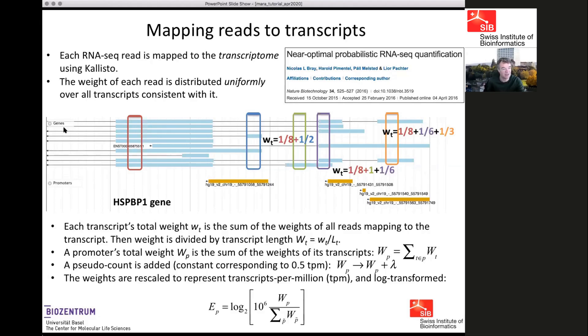Here I've shown five different RNA-seq reads, with the transcriptome annotation in light blue showing various isoforms. The red read maps to eight different transcripts, so we assign a weight of 1/8 to each. The blue read overlaps two transcripts, so each gets weight 1/2. The green read hits just one transcript, so it gets weight 1. We then calculate a total weight for each transcript as the sum of weights from all assigned reads.